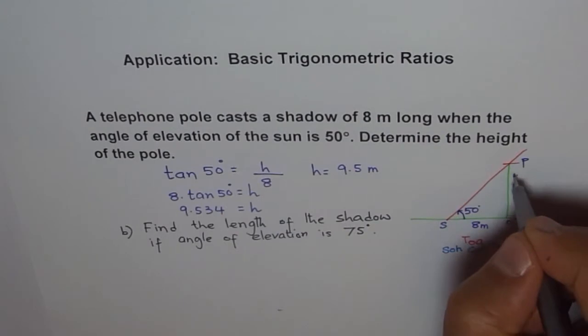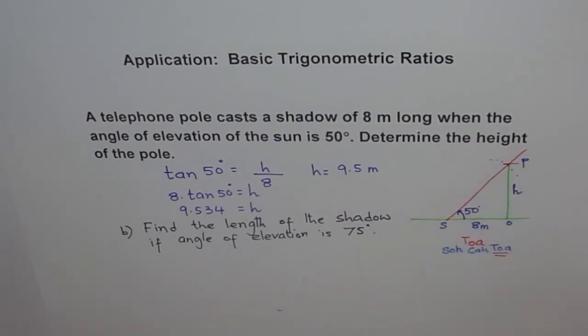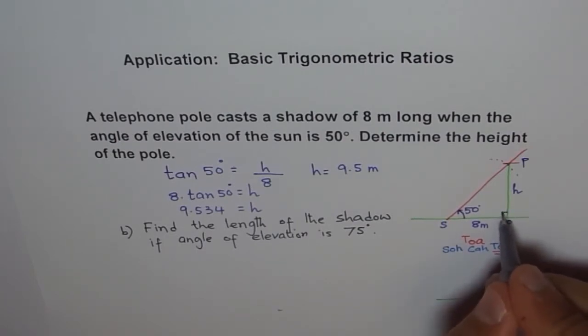The sun goes up and the angle of elevation increases to 75 degrees, so we expect a smaller shadow. Let me make a new diagram for the same pole. We already know the height of the pole. At this time, it will be steeper. This is 75 degrees, and these are right angles.